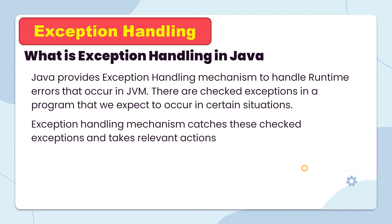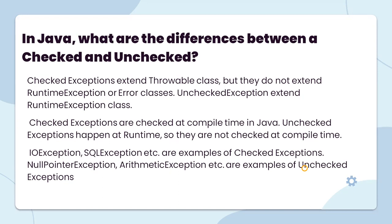Now let's move to exception handling in Java. Java provides an exception handling mechanism to handle runtime errors that occur in the JVM. There are checked exceptions in a program that we expect to occur in certain situations. The exception handling mechanism catches the checked exception and takes relevant action. What are the differences between a checked and unchecked exception? Checked exceptions extend the Throwable class but do not extend RuntimeException. Unchecked exceptions extend the RuntimeException class.